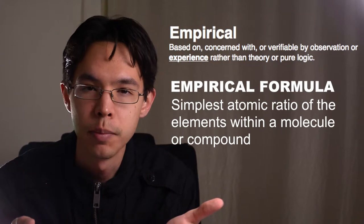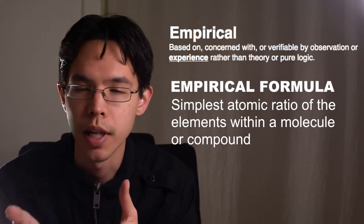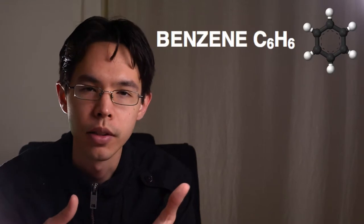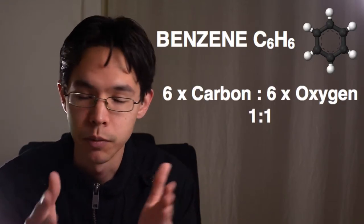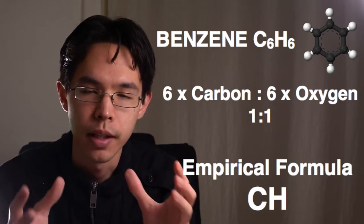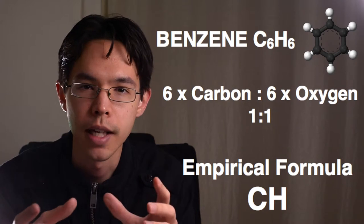The empirical formula is just the simplest atomic ratio between each of the elements of a molecule or a compound. In the case of benzene, you've got C6H6, which has six of each element, so it's roughly 1 to 1. Knowing that, you can reduce that formula down to an empirical formula of CH.